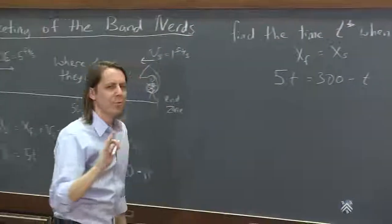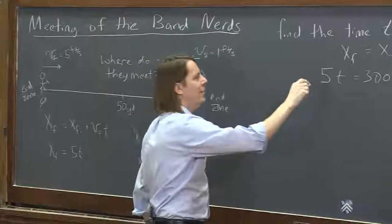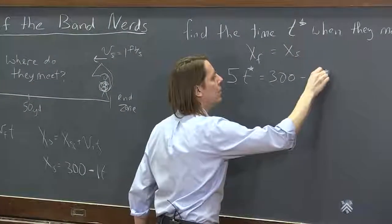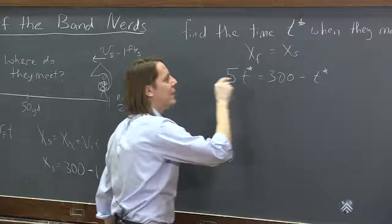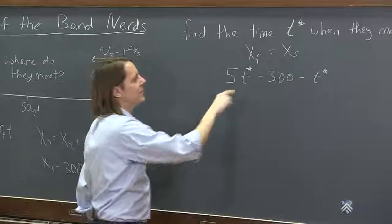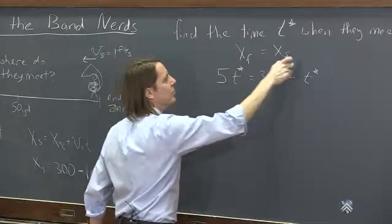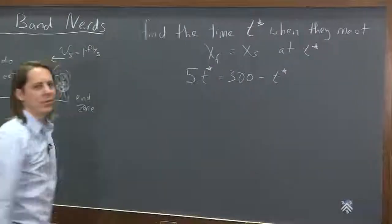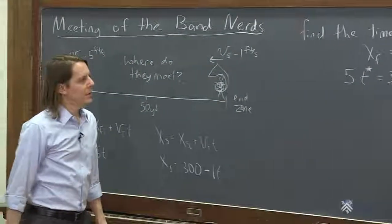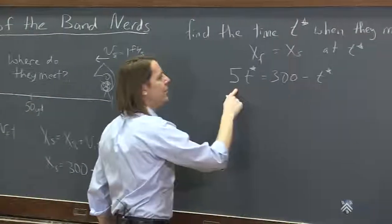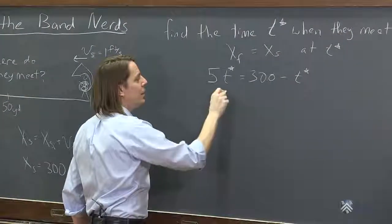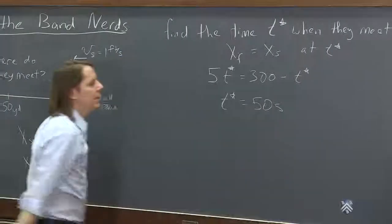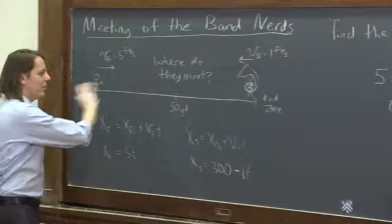And now, something very important. When I write something like this, I like to put a star. Because this is no longer a variable t. This is now a specific time. It's the time when this happens. So this equals this at t star. And here's how you solve for t star. So let's see. This would come over here and make 6t star and go into there. And you get that t star is 50 seconds. Takes 50 seconds for them to cross the field and meet.